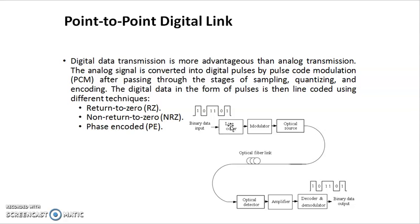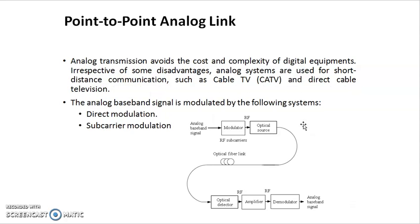A point-to-point link uses electrical input and electrical output through the fiber using the source and detector. There are two types of transmission links: digital link and analog link. For a digital link, binary input data goes to the line coder, then modulator, then optical source; at the receiver we have a detector, amplifier, decoder, and demodulator. For an analog link, either direct modulation or sub-carrier modulation is used: the analog baseband signal goes to a modulator, the modulated electrical signal is converted to optical output through the source, then detector, amplifier, and demodulator.